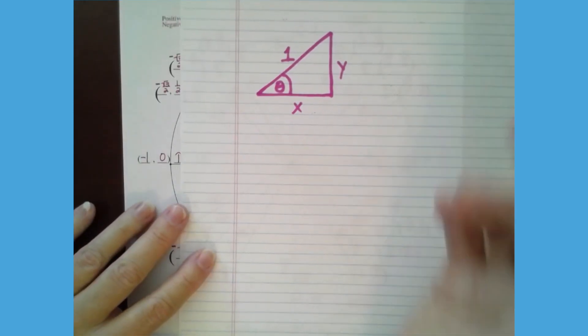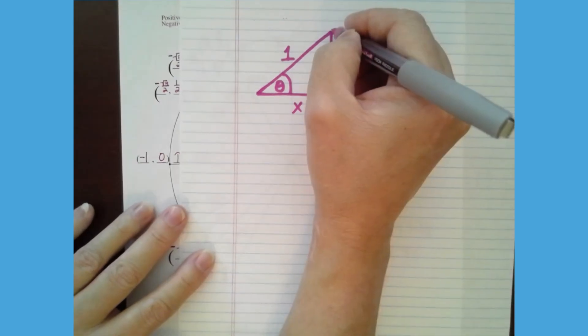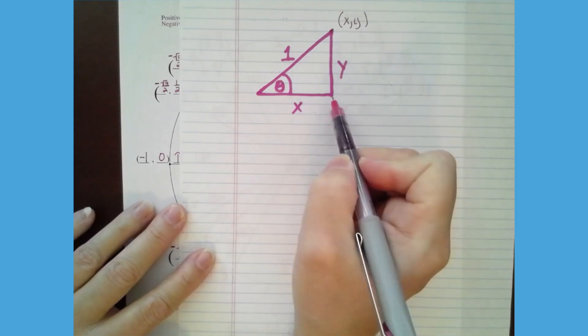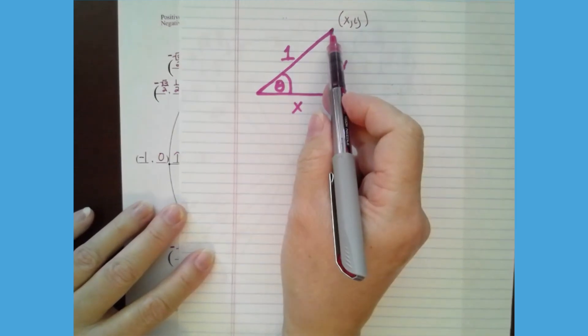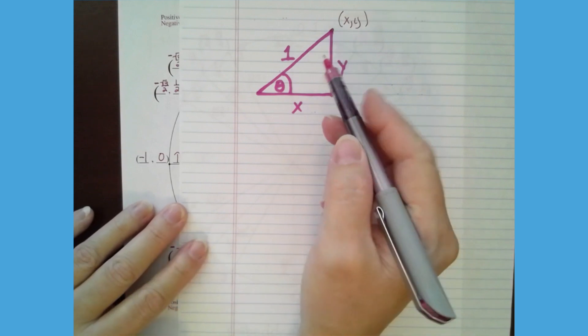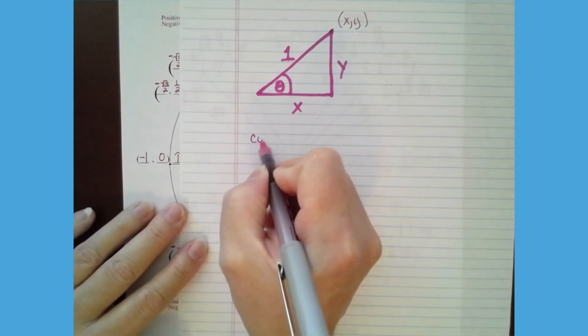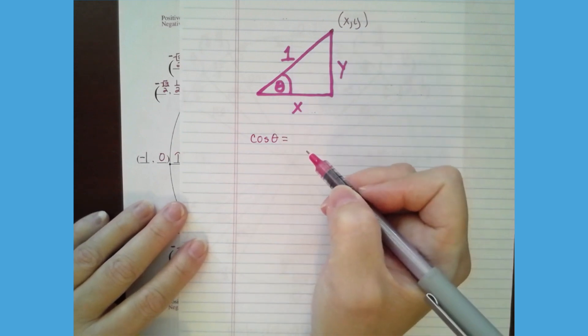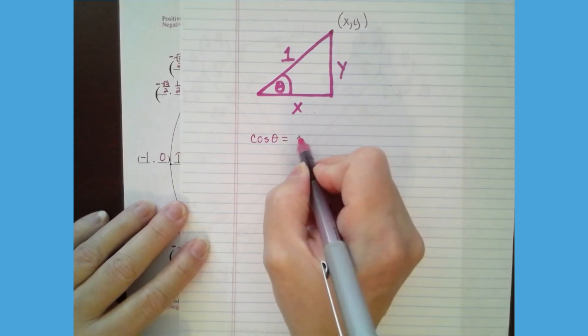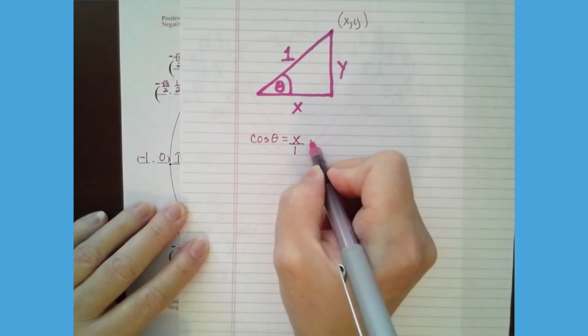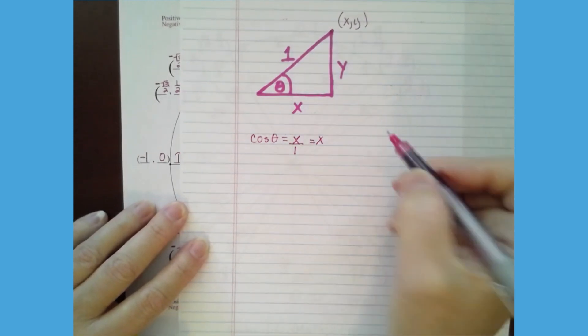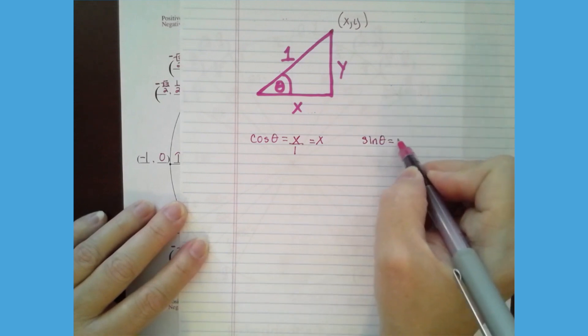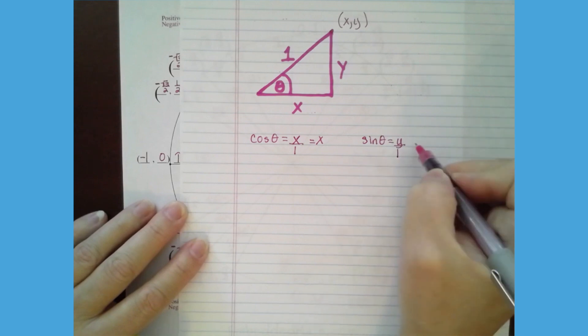So when we put the points on the unit circle, this is the point x, y. You go over x and you go up y and you hit that point in the unit circle. And this is always 1. So if we write the cosine of theta for any theta, it's adjacent, which is x over 1, which is simply x. If we write the sine of theta, that's opposite, which is y over 1, which is simply y.